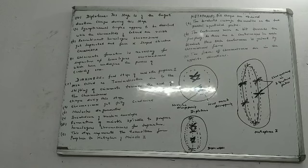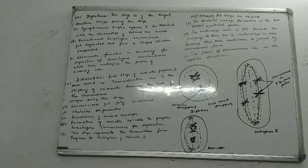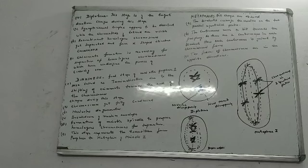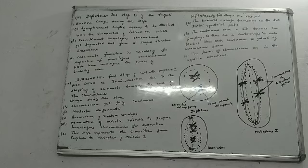Metaphase I is taken up in the same video because it is a very small event — only three things happen in metaphase. After prophase I is over, we move on to metaphase I. Following changes are observed in metaphase I: the bivalents arrange themselves on the two parallel equatorial plates.